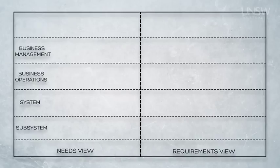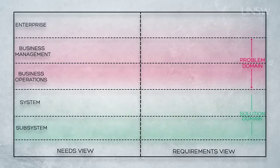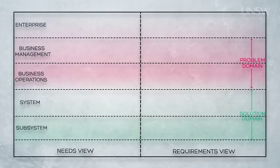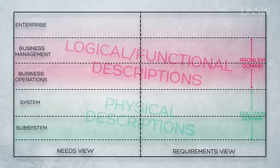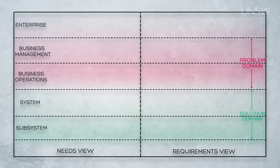As illustrated here, the enterprise, business management and business operations views are in the problem domain. The system and subsystem and lower views are in the solution domain. As we discussed in earlier modules, the problem domain is generally considered to be the responsibility of those who have ownership of the problem to be solved. So the descriptions of the system are mostly in the language of the customers, business management and business operations, focusing on what the system needs to be able to do, how well it should be done and why — these are the logical or functional descriptions. The solution domain, on the other hand, is often considered to be the responsibility of those implementing the system, so descriptions there are mostly in engineering and physical terms, focusing on how the problem is to be solved — these are called physical descriptions.